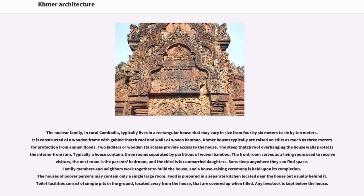The nuclear family in rural Cambodia typically lives in a rectangular house ranging from 4 by 6 meters to 6 by 10 meters. It is constructed of a wooden frame with a gabled thatch roof and walls of woven bamboo. Khmer houses are typically raised on stilts as much as 3 meters for protection from annual floods. Two ladders or wooden staircases provide access. The steep thatch roof overhanging the walls protects the interior from rain. Typically a house contains three rooms separated by partitions of woven bamboo: the front room serves as a living room for visitors, the next is the parents' bedroom, and the third is for unmarried daughters. Sons sleep anywhere they can find space. Family members and neighbors work together to build the house, and a house-raising ceremony is held upon completion. The houses of poorer persons may contain only a single large room. Food is prepared in a separate kitchen behind the house; toilet facilities consist of simple pits in the ground located away from the house.